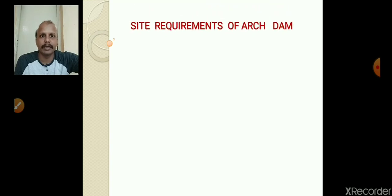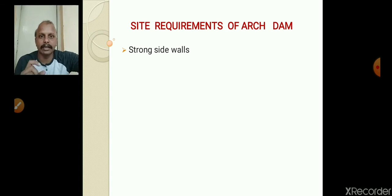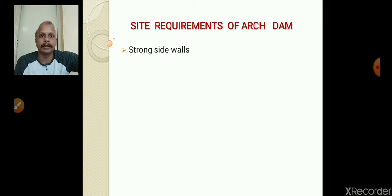The first site requirement of Arch Dam is strong side walls, meaning strong abutments. When the arch dam is in action, the maximum water load coming on the dam body gets transferred towards the abutments. Therefore, in order to bear this maximum water thrust, the abutments should be strong.